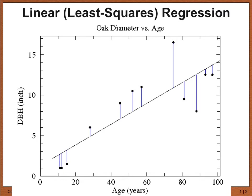Diameter at breast height is about 4½ feet off the ground — that's the convention for where you measure a tree's diameter. This shows the relationship between the age of a tree and its diameter, because trees get thicker and their diameter increases as they age, as shown in rings of growth within the trunk. These points represent actual measurements of trees, where their age is the x-coordinate and their diameter is the y-coordinate.